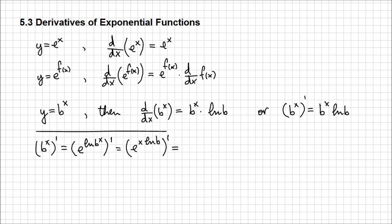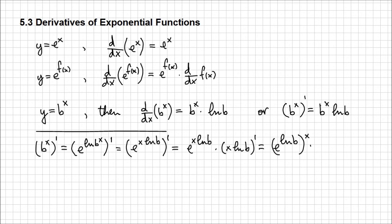I recognize that the exponent of e can be considered a function f(x), just like in the second rule for e^f(x). So using the second rule for differentiating exponential functions, this derivative is going to be e^(x · ln b) times the derivative of the exponent, x · ln b. Rearranging the first term as (e^ln b)^x — since e^ln(b) equals b — times the derivative of x · ln b: ln b is a constant, derivative of x is 1, so we get b^x · ln b. This is exactly what the rule stated.